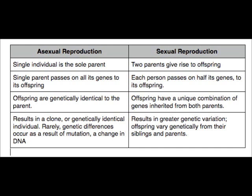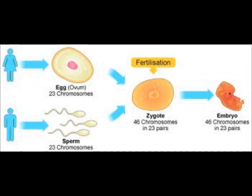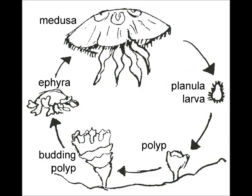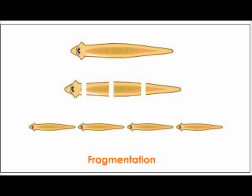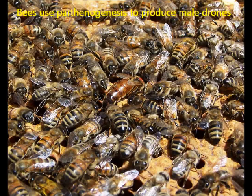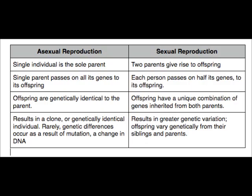Chapter 46: Animal Reproduction. Animals reproduce either asexually or sexually. Sexual reproduction requires the fusion of male and female gametes, forming a diploid zygote. Asexual reproduction is the production of offspring without gamete fusion. Fission, budding, fragmentation with regeneration, and parthenogenesis are mechanisms of asexual reproduction in various invertebrates.